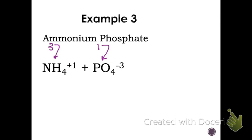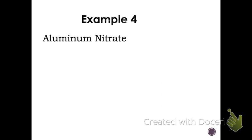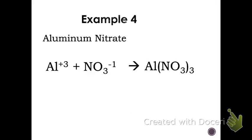PO4 is not going to get parentheses because we only need one of those in this compound. And our last example here, aluminum nitrate. Aluminum has a plus three charge. Nitrate is NO3 with a minus one charge. To cancel out our charges, we need one aluminum and we need three nitrates. So we're going to write Al and then we want to say that we have three nitrates. Nitrate is polyatomic, so we're going to put parentheses around it.